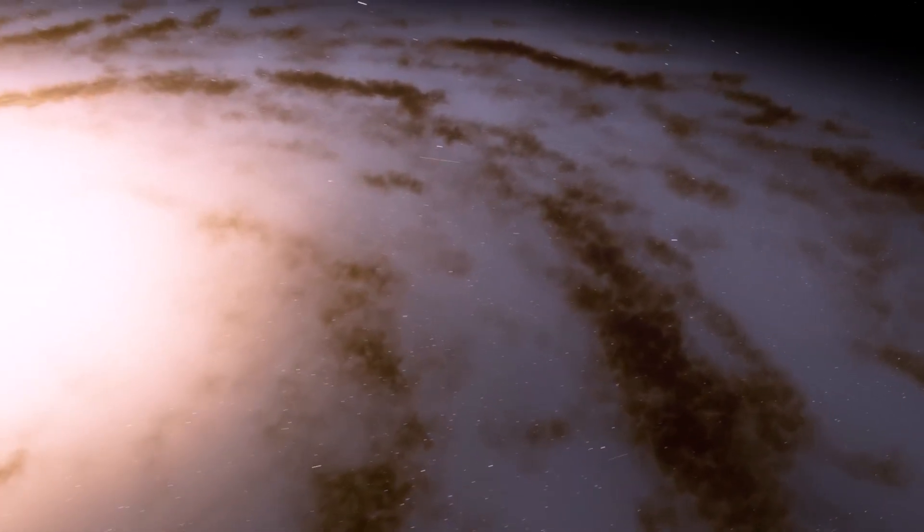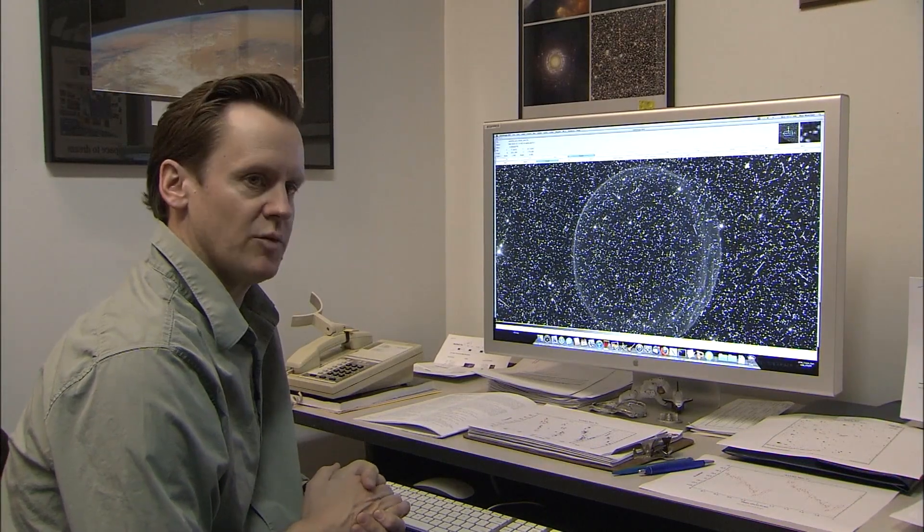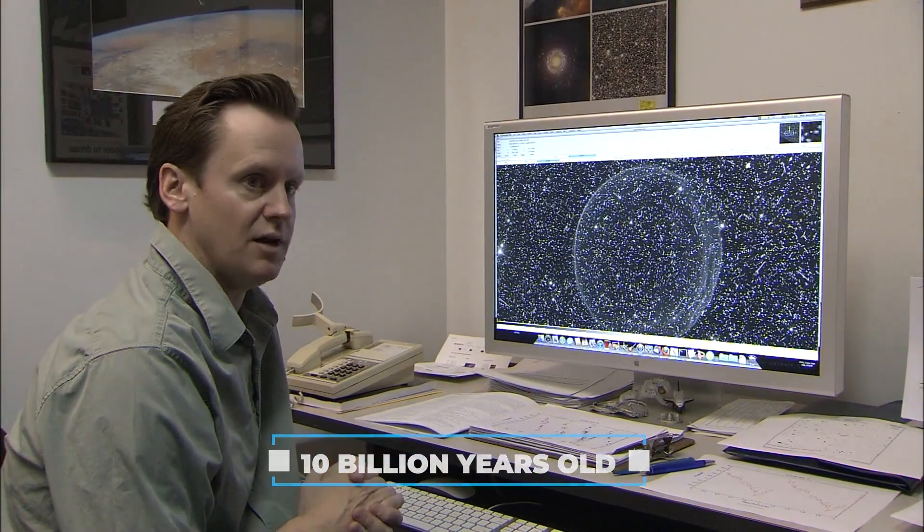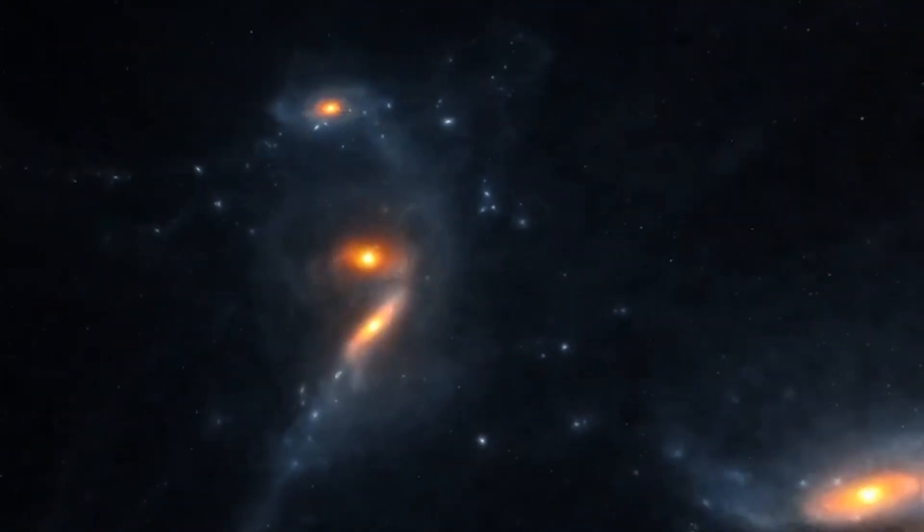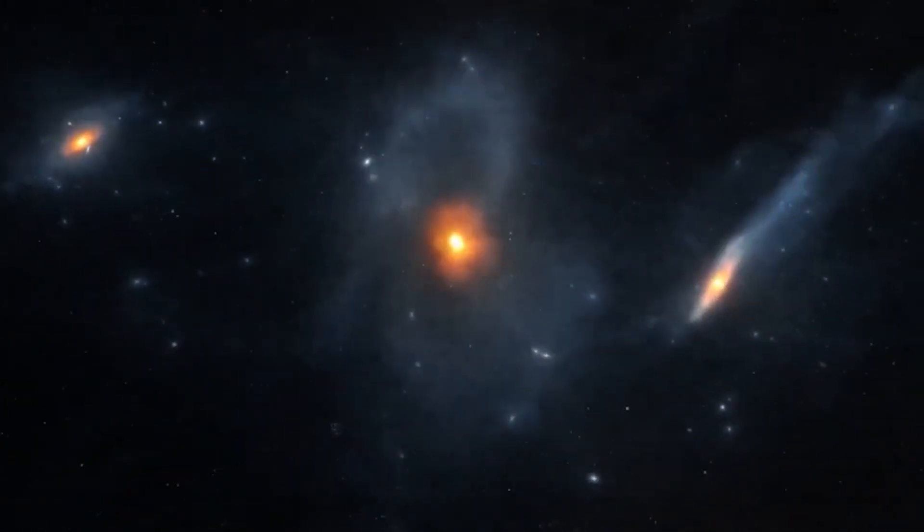It turns out Andromeda is really big, with lots of stars. Its size makes scientists think it's about 10 billion years old. That's really old. They also think Andromeda formed by smaller objects coming together over a very long time.